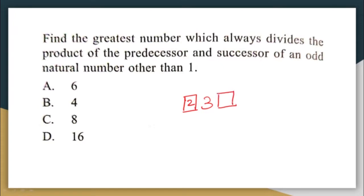The number that comes after three is the successor, which is four. The number that comes after three is called the successor and the number that comes before three is called the predecessor. So here the predecessor and the successor are two and four respectively. Now two multiplied by four is eight.